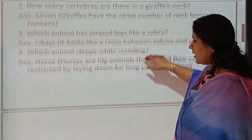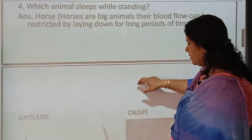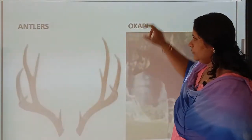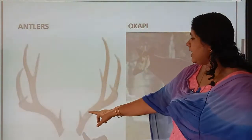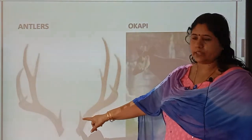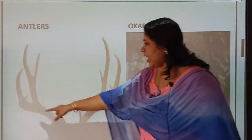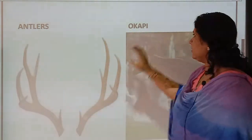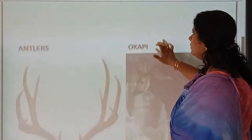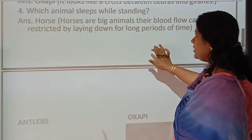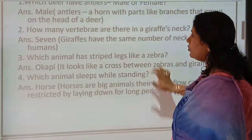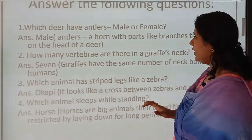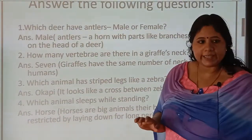It looks somewhat like this — this is called antlers. It looks like branches and is mainly found on the male deer's head.